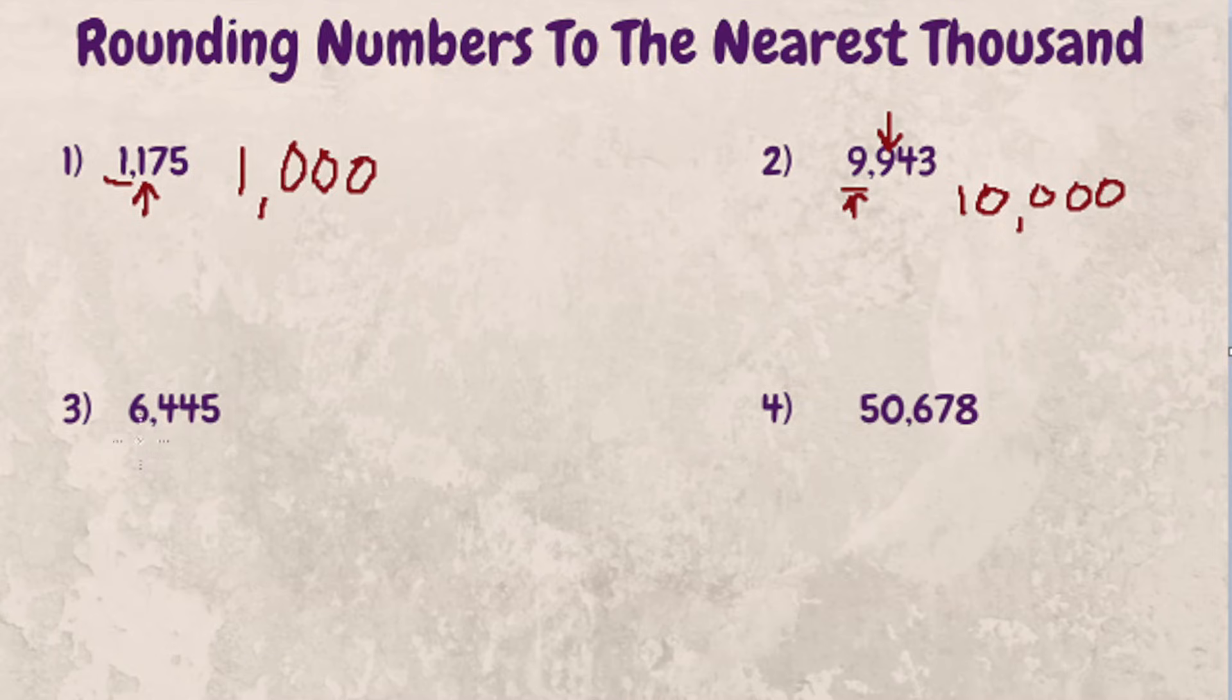Example three, six thousand four hundred and forty-five. So six is our thousand place. Four is our digit next to it.